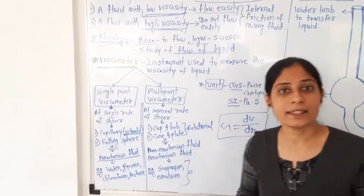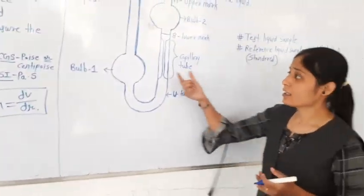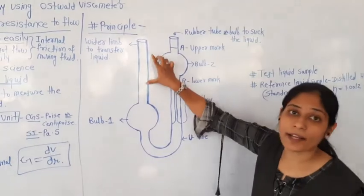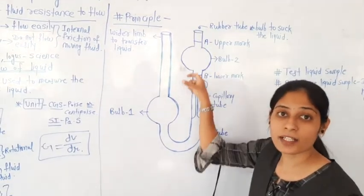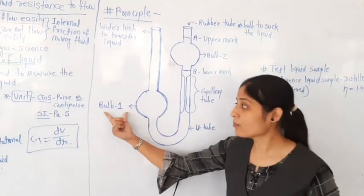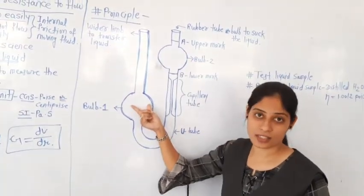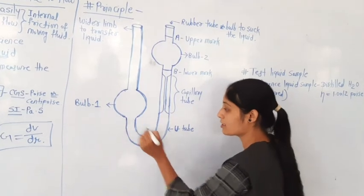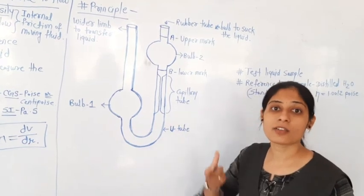Moving towards the principle of the Ostwald viscometer. In this diagram, this part is called the wider limb — we transfer our liquid sample through this wider limb. Below the wider limb, a large bulb is present. This is bulb 1 and this is bulb 2. Bulb 1 is larger compared to bulb 2. After bulb 1, a U-shaped tube is present. Due to the U-tube present in the Ostwald viscometer, it is also called the U-tube viscometer.